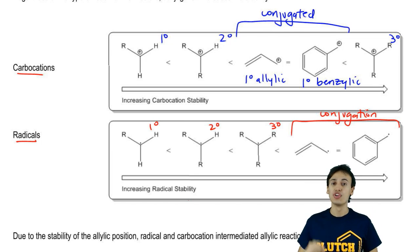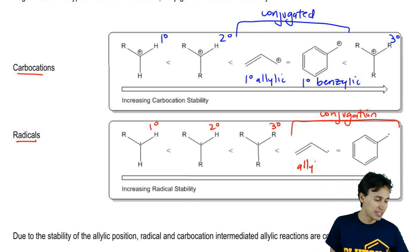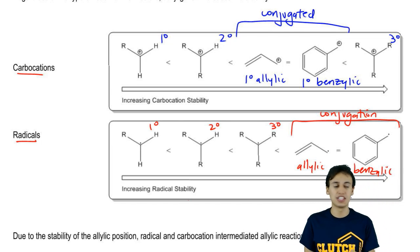Whereas for radicals, radicals are actually the most stabilized by resonance, meaning that allylic and benzylic positions are truly ideal for radicals to exist because that's the most stable type of radical that you can get.